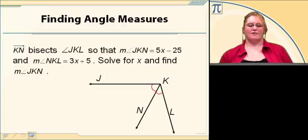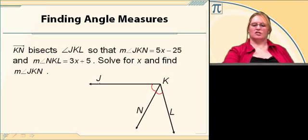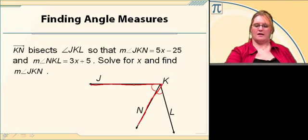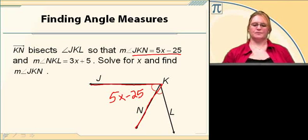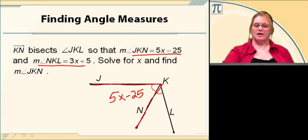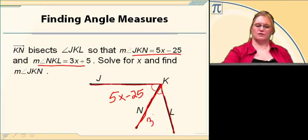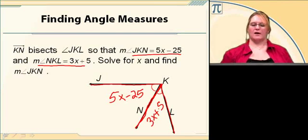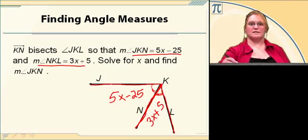Let's look at an example. We have angle JKL, and KN is our bisector. Angle JKN equals 5X minus 25, and angle NKL equals 3X plus 5. The angles have been marked with matching marks because they are congruent — because it's an angle bisector. So angle JKN is congruent to angle NKL.